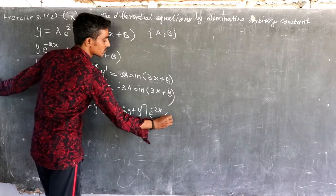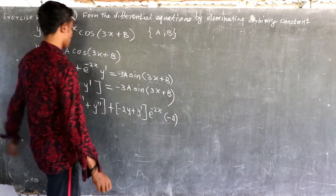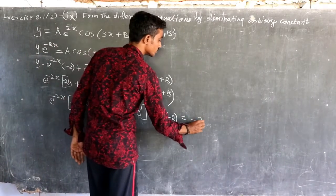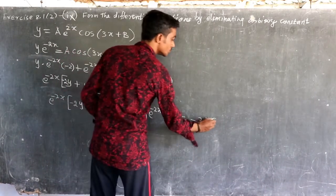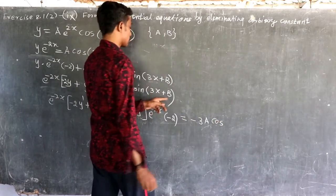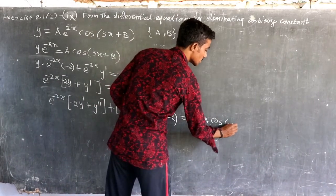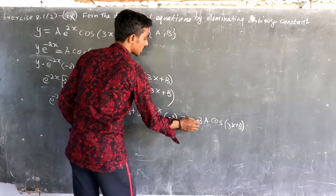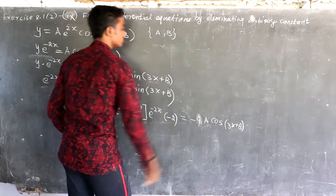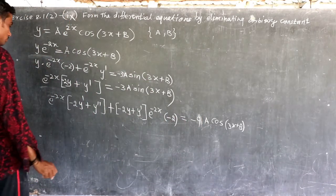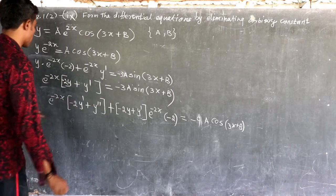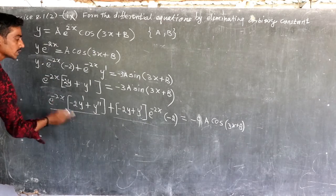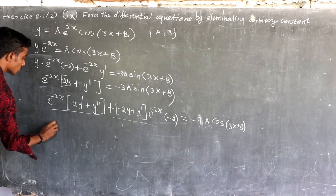Into e^(-2x) minus 2. Minus 3. Constant of the ringer: sine of the cos, 3x plus b, 3x plus b. 3 in front of the ringer: 3 and 3. So in my e^(-2x), we will get e^(-2x), e^(-2x), e^(-2x).